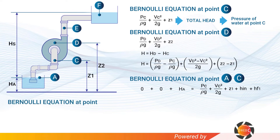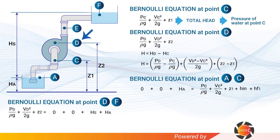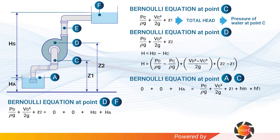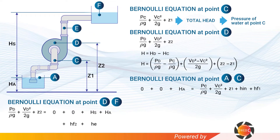Applying the Bernoulli equation between point D and point F: the total head at D is pd/(ρg) + vd²/(2g) + z2. At point F, pressure is zero and velocity is zero, leaving the height hs + hA. Between points D and F there are losses: hf2 due to friction in the delivery pipe, and he due to water leaving the delivery pipe to enter the upper reservoir.